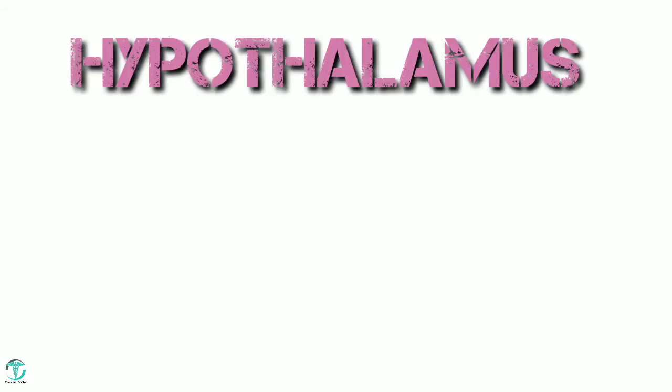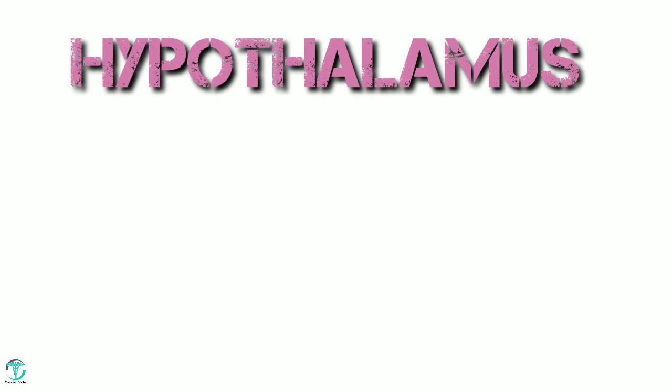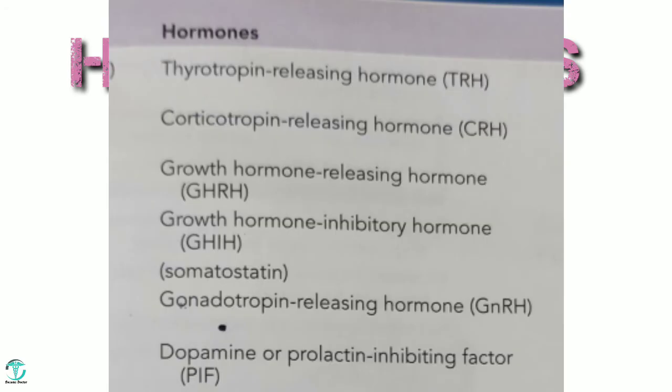Starting with hypothalamus — there are altogether six hormones secreted by the hypothalamus. The first one is thyrotropin releasing hormone, also called TRH. The main role of TRH is that when it is released from the hypothalamus, it stimulates TSH, which then causes the release of T4 and T3 from the thyroid gland.